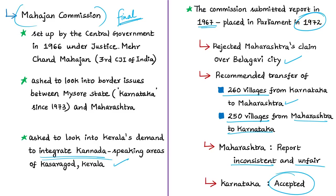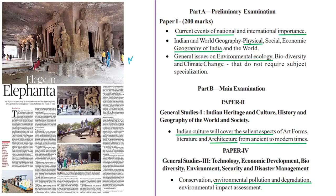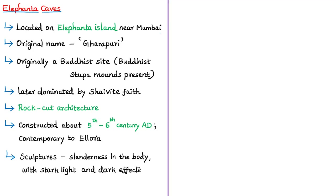The next discussion is about the sorry state of Elephanta Caves, based on an article in today's magazine. The analysis covers the Elephanta Caves, the concept of a World Heritage Site, and the present threats faced by the site. The Elephanta Caves are located on Elephanta Island near Mumbai in Maharashtra. Originally known as Gharapuri, the island was renamed by Portuguese invaders after a giant stone sculpture of an elephant found there.